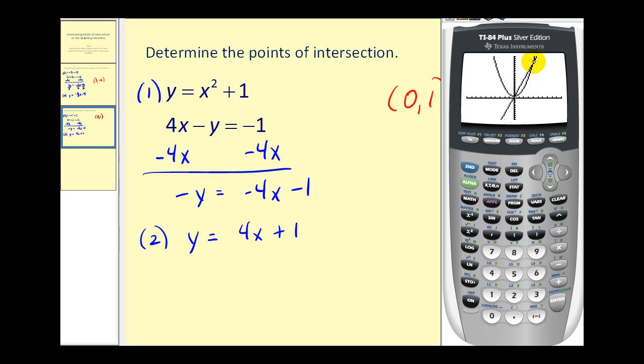To find this second point of intersection, we'll press second trace again, option five. But before we press enter, we have to move this cursor closer to the second point of intersection. Press the right arrow to move the cursor to the right until we're closer to this point. Now press enter three times. The second point of intersection is the point (4, 17).